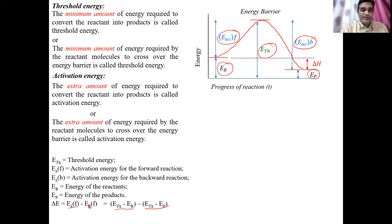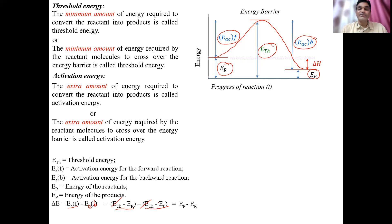After cancellation, we get: delta H = E_P − E_R, meaning delta H equals the energy of product minus the energy of the reactant. So delta H is simply the energy difference between product and reactant. These are the key relations to keep in mind.